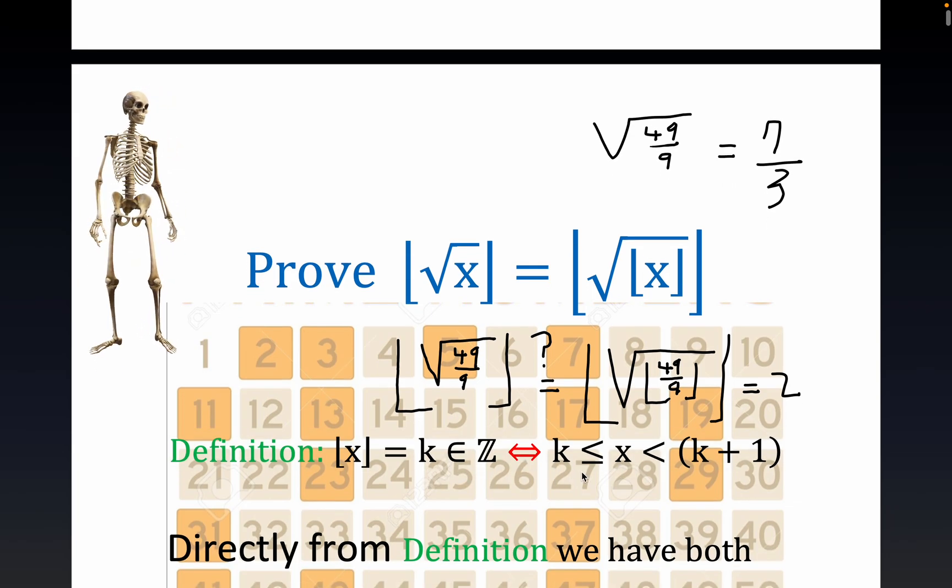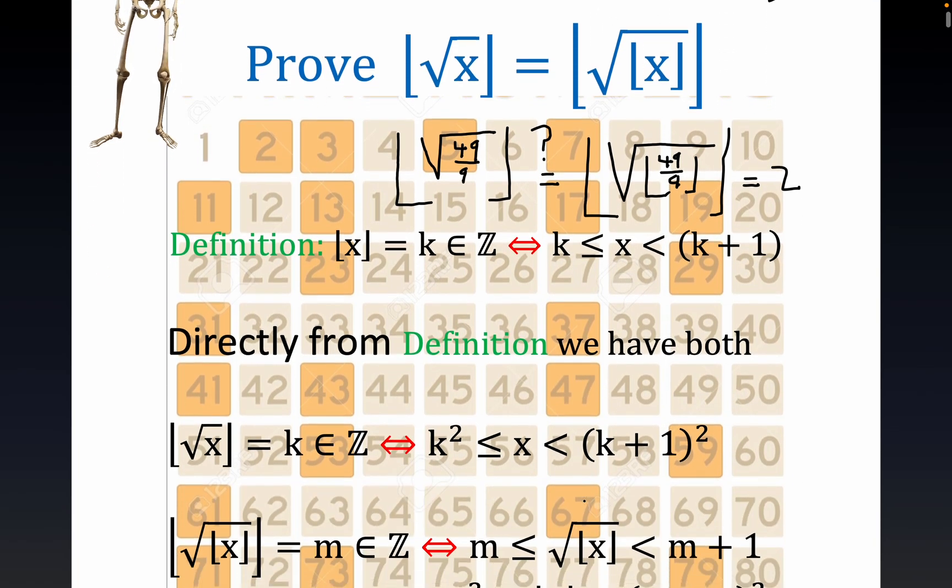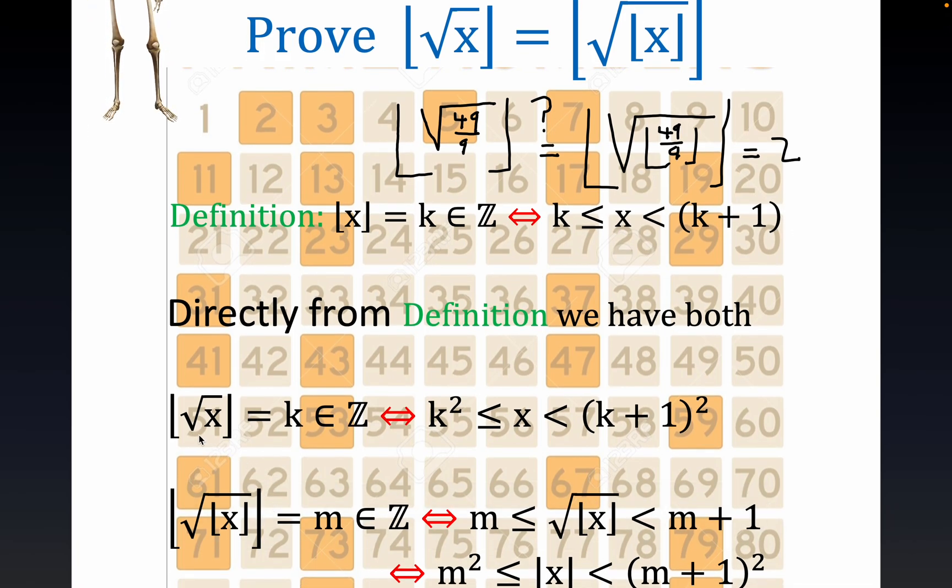Of the floor function—it just upper bounds like this. Directly from the definition, notice that this statement right here, that the left hand side has the square root of x in the floor.